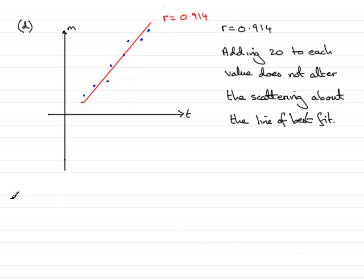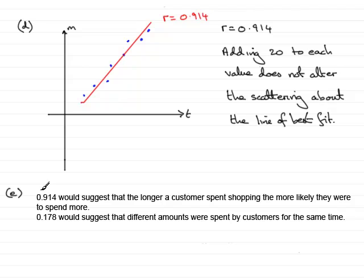Now, in Part E, we're told that Jill went in on another day and the product moment correlation coefficient now was 0.178. And we've got to give a reason why these two values might be different.